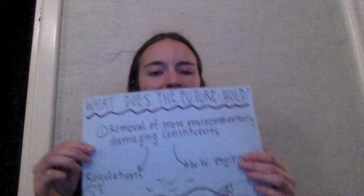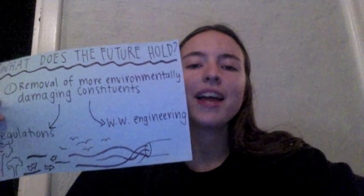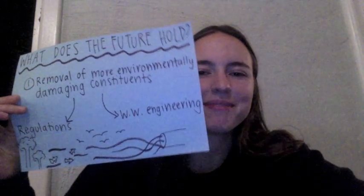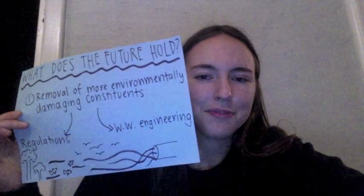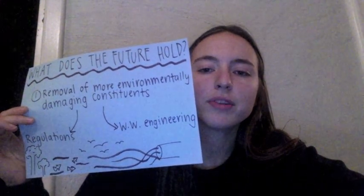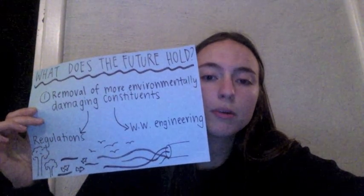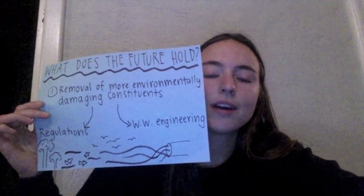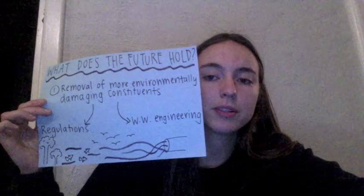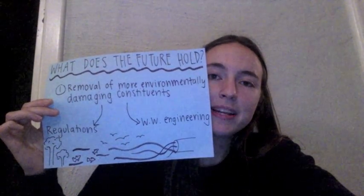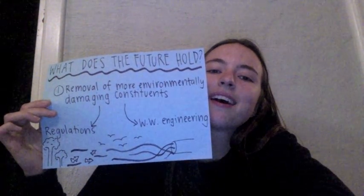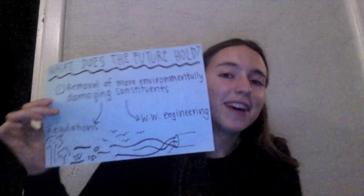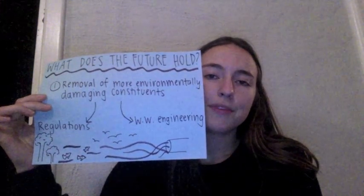So by now you might be asking, what does the future hold? If regulatory frameworks and wastewater engineering practices are so closely tied, then surely we'll see this trend continue into the future. Firstly, I think the removal of more environmentally damaging constituents should be incorporated into the legislation. Right now, few parameters require monitoring. These include E. coli, biological oxygen demand, suspended solids, pH, turbidity, disinfection, clostridia, and coliphages. I think that any constituent with the potential to adversely affect ecosystems should be required to be removed during the treatment process.